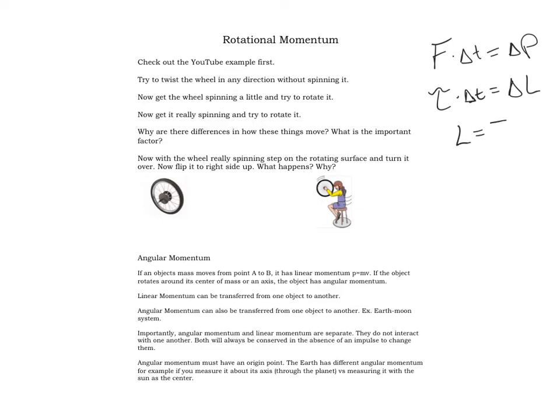Angular momentum is equal to I omega, where I — the moment of inertia — is the equivalent of mass in linear motion, and omega is the angular speed, which is how fast it's spinning. Now with the wheel really spinning, step on the rotating surface and turn it over. This is what the guy did — he was standing still, and when he rotated the wheel, he began spinning in the other direction. That's because angular momentum, just like linear momentum, has to be conserved.